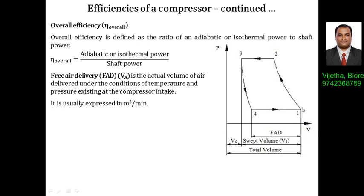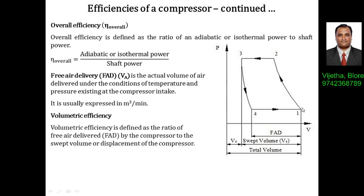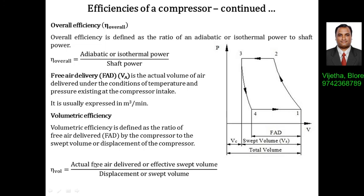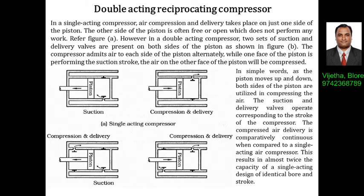The more important efficiency to discuss is volumetric efficiency. Volumetric efficiency is defined as the ratio of free air delivered by the compressor to the swept volume or displacement of the compressor — that is, VA divided by VS, or (V1 − V4) divided by (V1 − V3). The entire swept volume is not occupied by air; air only enters after process 4, so the effective swept volume equals the free air delivery. The ratio of free air delivery to swept volume gives volumetric efficiency.